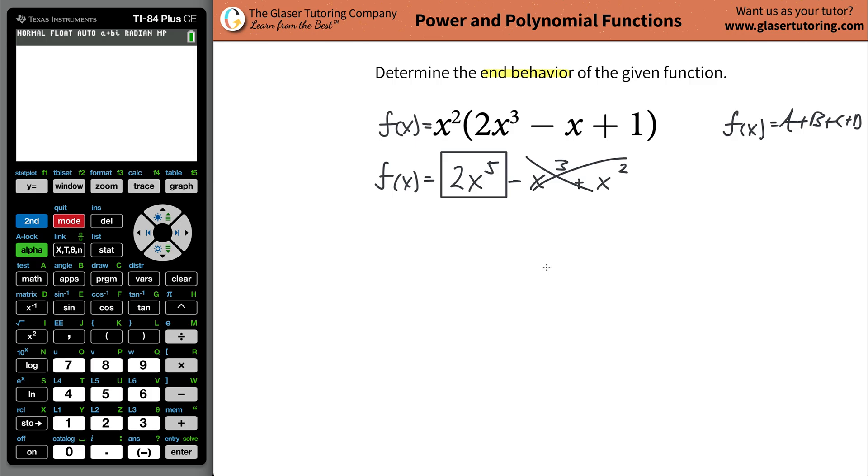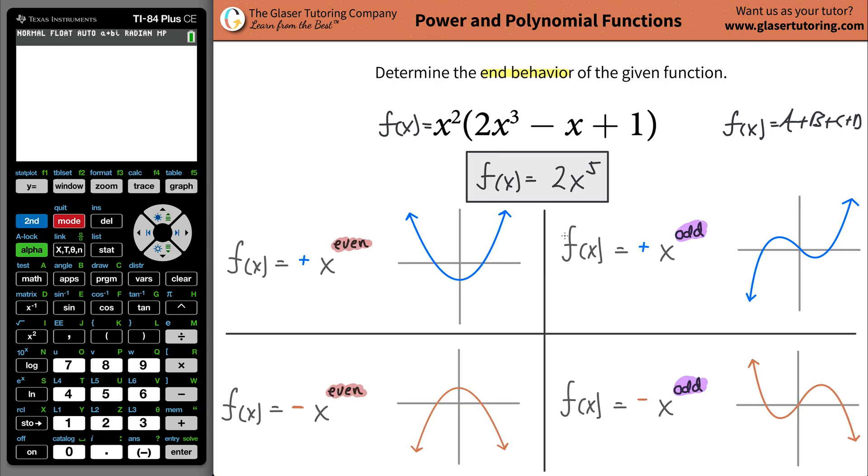Now I have a nice little table to help us out. Take a look. So now the first thing to do is to determine whether that degree of your polynomial here is even or odd. This is easy, right? 5, it's odd. So you're going to be focusing on the right-hand side. One of these two graphs here in general will represent the function.